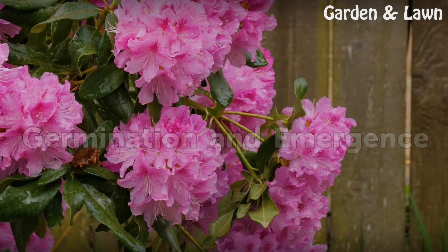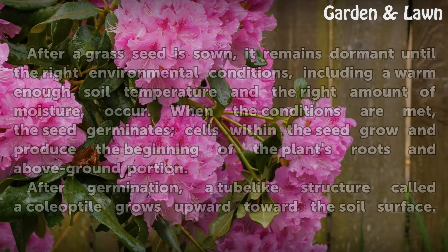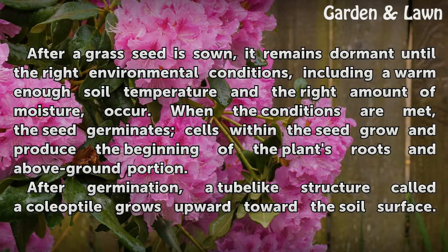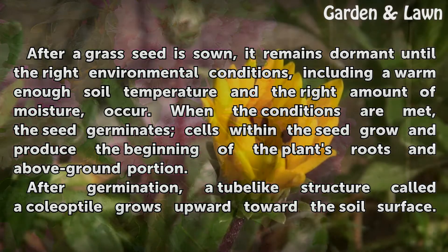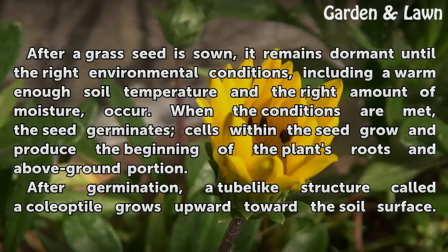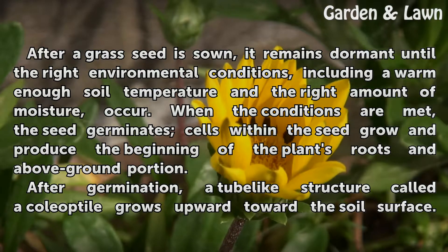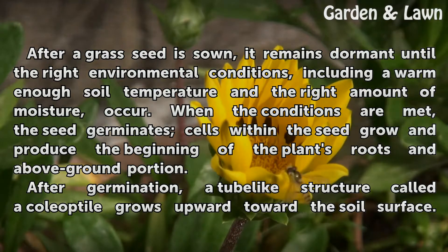Germination and emergence. After a grass seed is sown, it remains dormant until the right environmental conditions, including a warm enough soil temperature and the right amount of moisture, occur. When the conditions are met, the seed germinates — cells within the seed grow and produce the beginning of the plant's roots and above-ground portion.